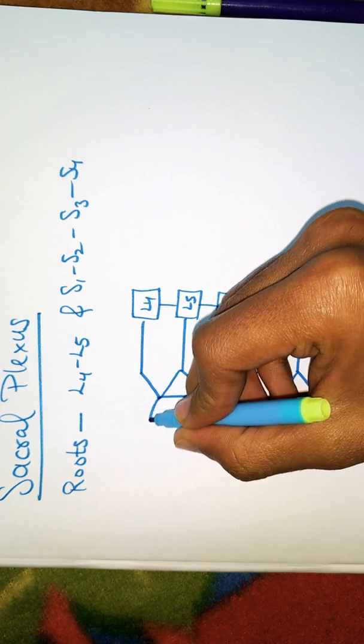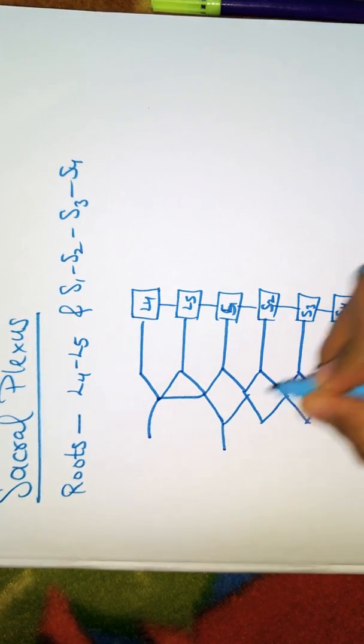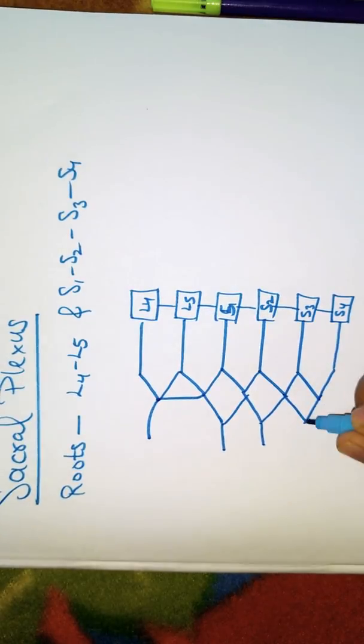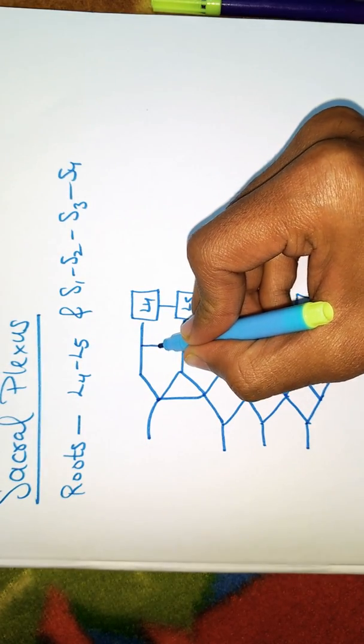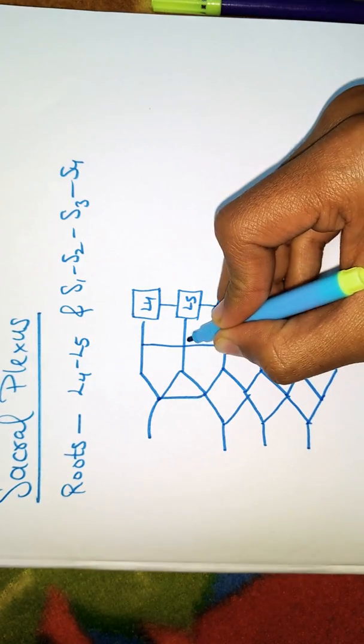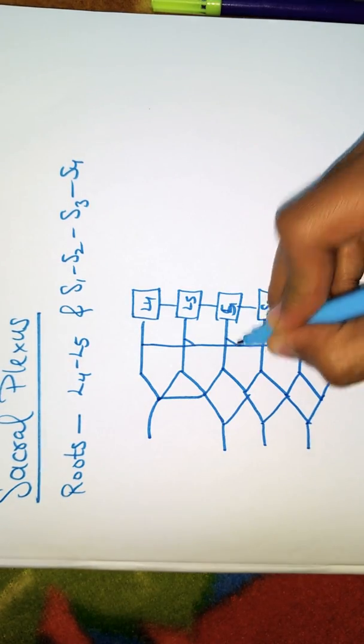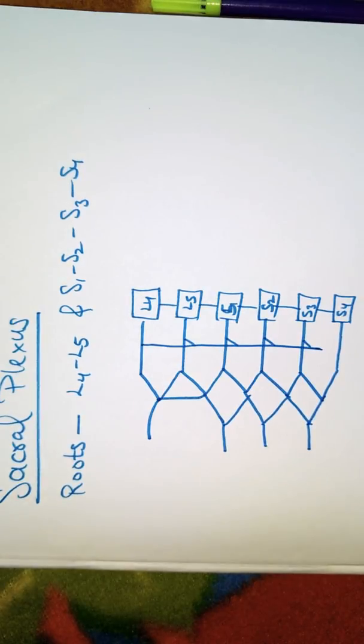I have nerves emerging at different points. One nerve here, another nerve here, another nerve here. And the final nerve goes straight down. I have nerves joining. Now, perfect. I will tell you the names.